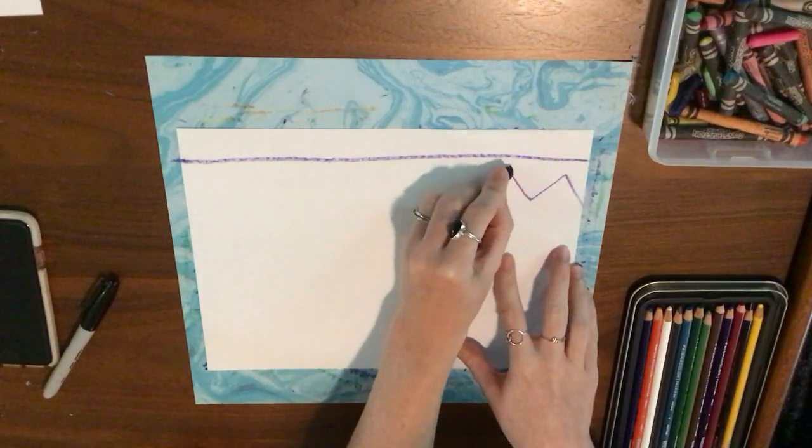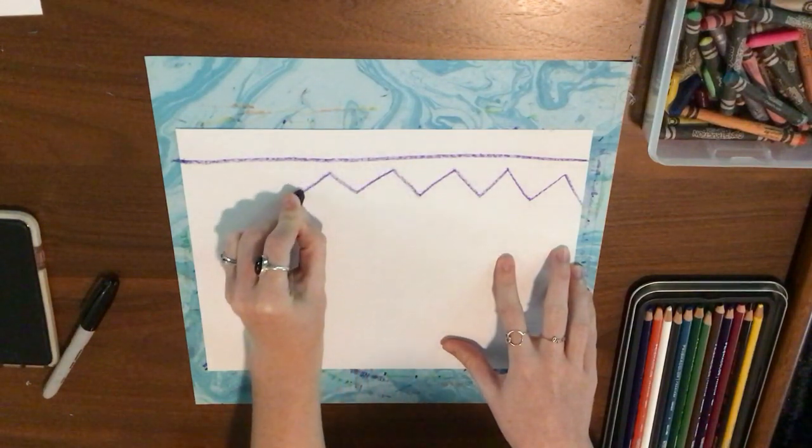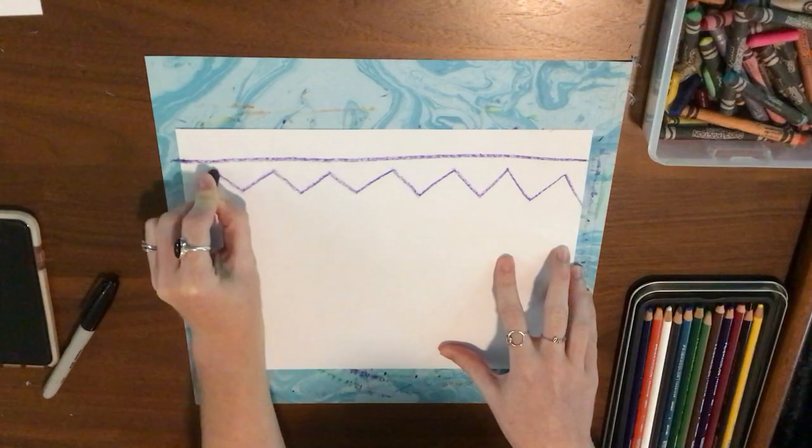The next line I'm going to draw is a zigzag line and it zig and zags. It goes up and down, up and down like little mountains.